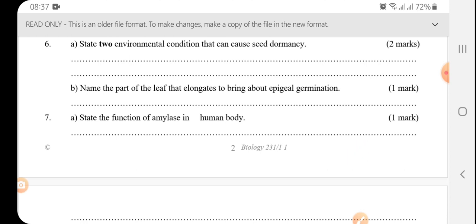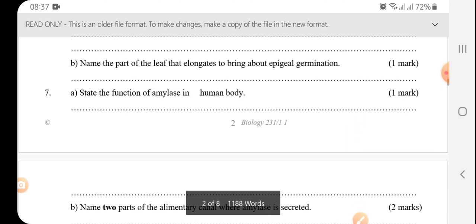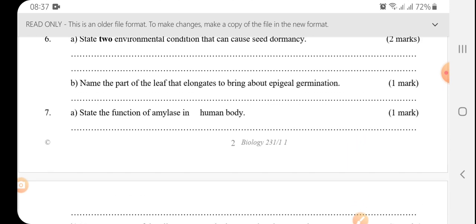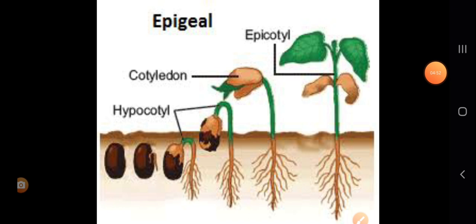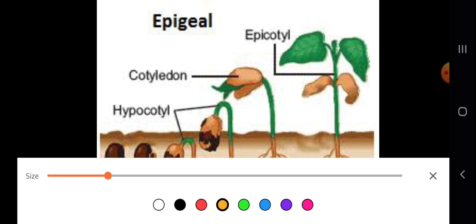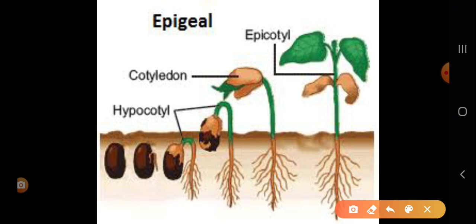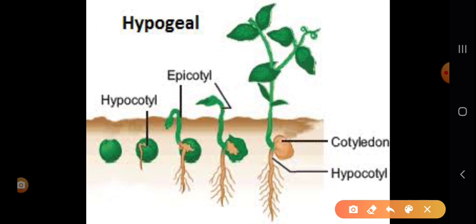Name the part of the leaf that elongates to bring about epigeal germination. So I'm going to explain using a picture. So that part is called the hypocotyl. Let me indicate it using color red. Let me use purple. So it is this part. So that's the part that pulls up. And that is epigeal. While in hypogeal, that part that elongates is called epicotyl. Let me indicate it's this part.